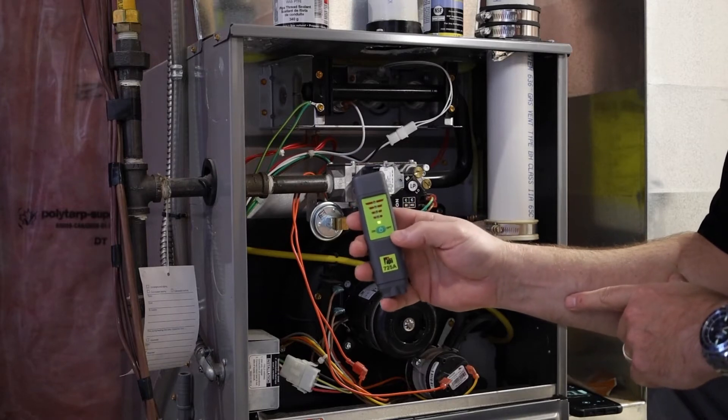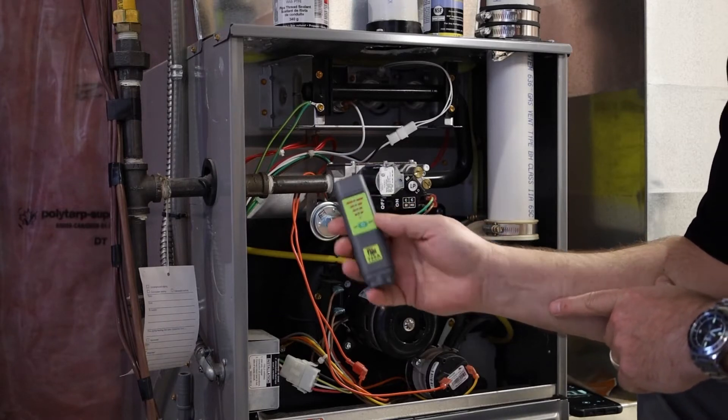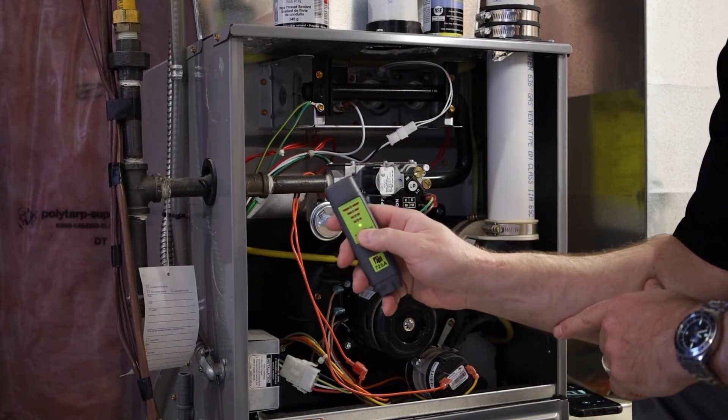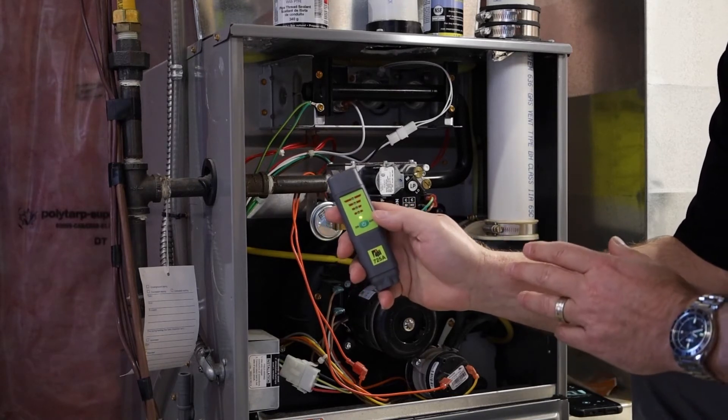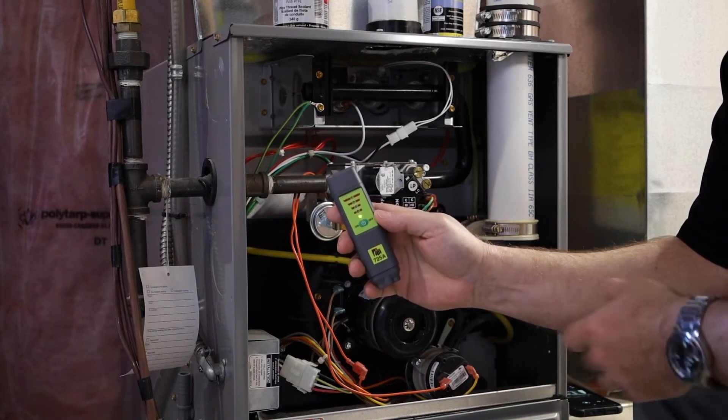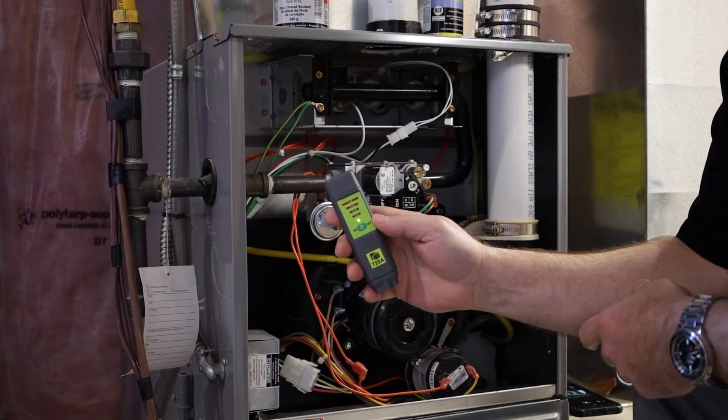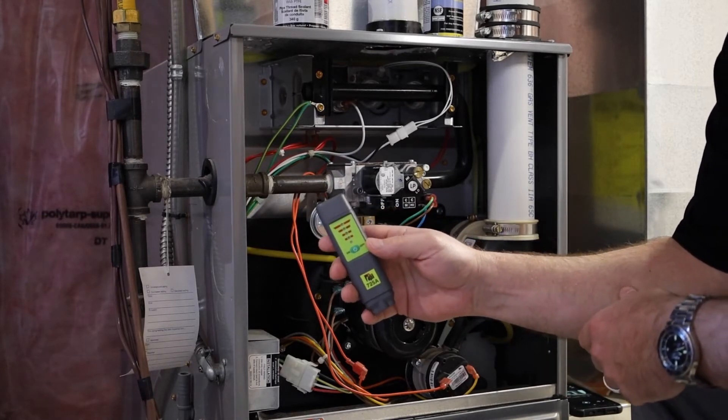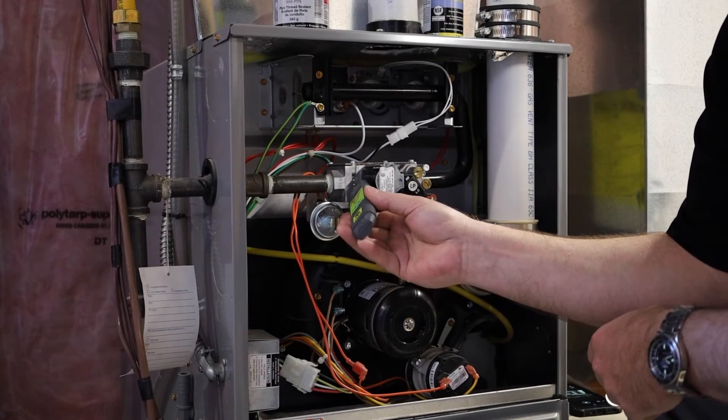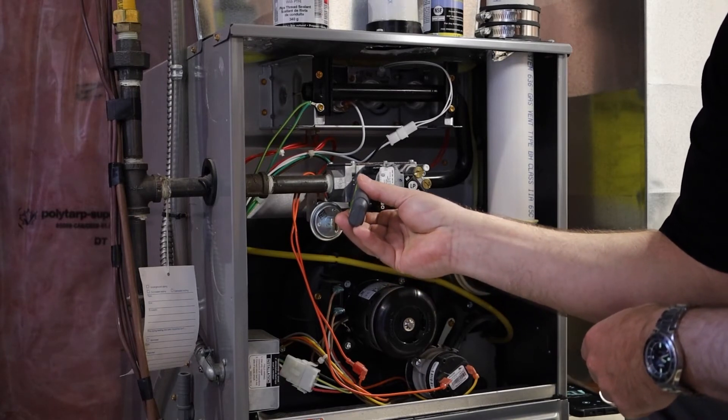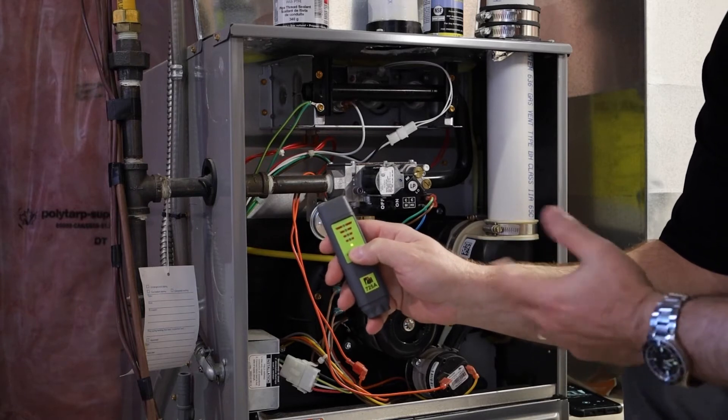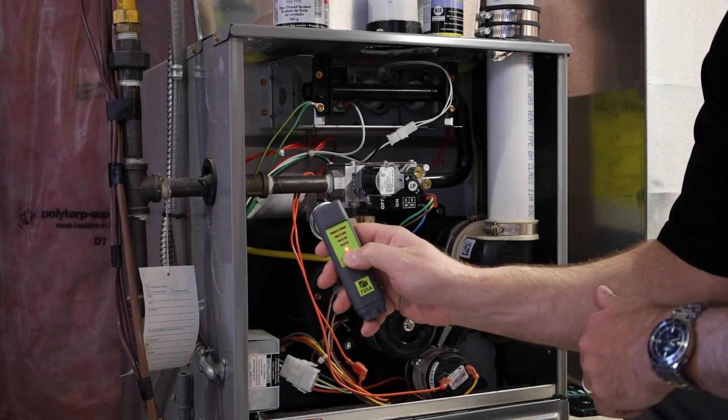Now with this leak detector when you detect a leak you can press a button and zero it out. So now it is only going to detect higher combustible gases, a higher sample of parts per million. So again go over to my suspected leak and there it goes. Obviously the higher it is, that's where the source of the leak is going to be.